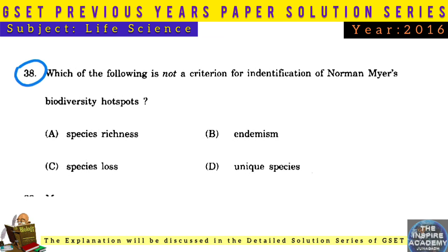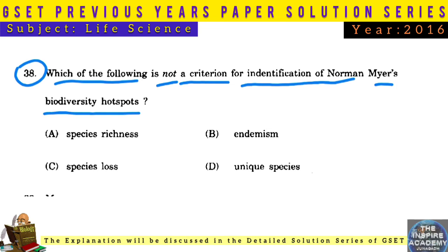Question No. 38: Which of the following is not a criterion for identification of Norman Myers' biodiversity hotspots? Answer: Unique species.